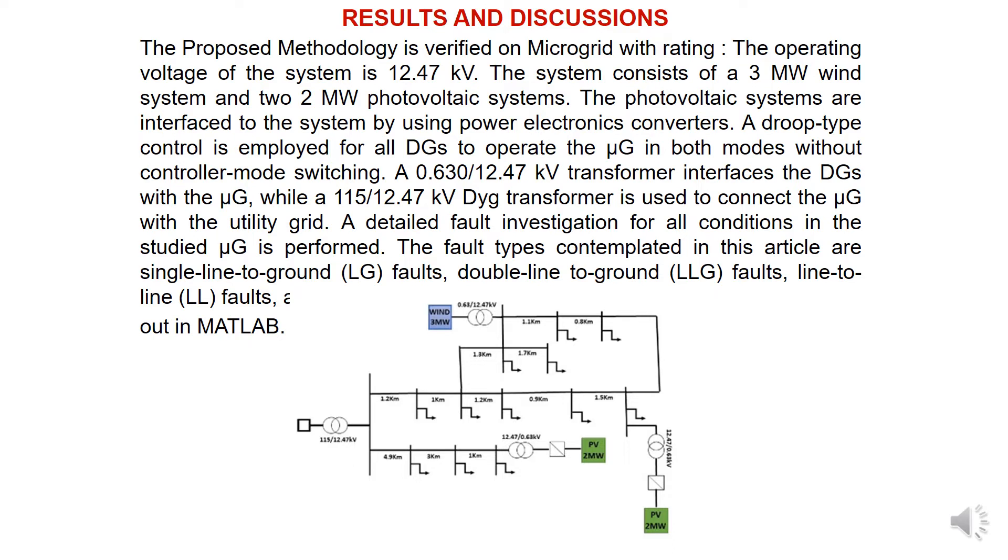The photovoltaic systems are interfaced with the system using power electronic converters. A droop-type control is employed for all distribution generation to operate the microgrid in both modes without controller mode switching. A 0.630 by 12.47 kV transformer interfaces the DGs with the microgrid, while a 115 by 12.47 kV transformer connects the microgrid with the utility grid.